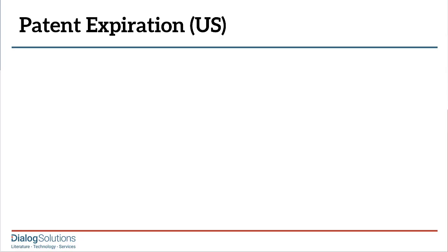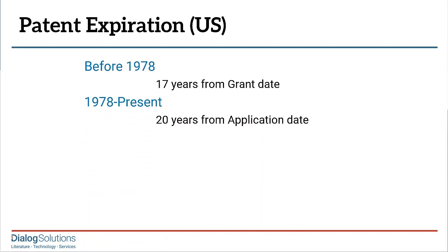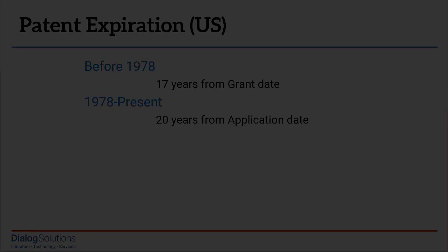The rule of thumb is that patent protection expires 20 years after the application was filed. That's the law in most countries, and it's been the rule in the United States since 1978. There are some exceptions, which we'll talk about, but let's begin with a typical case.